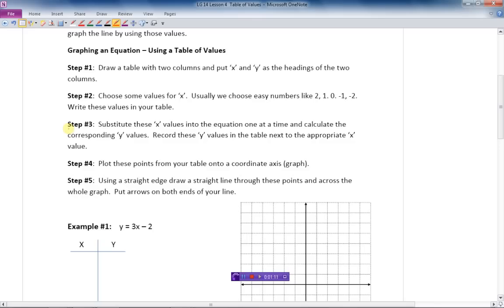Finally, we plot the pairs of numbers we get for X and Y on the graph and then draw a straight line through those points and see what it looks like. Let's just do that with the first example.